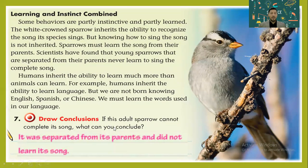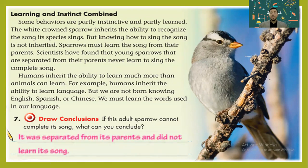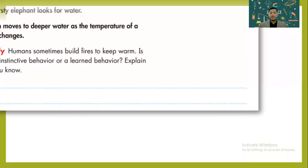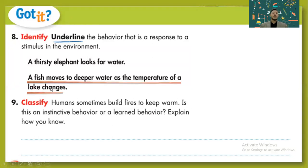What do you think? Here we have a question: if this adult sparrow cannot complete the song, what can you conclude? Yes — it was separated from its parents and didn't learn its song. Question eight: underline the behavior that is responding to a stimulus in the environment. A thirsty elephant looks for water, or a fish moves to deeper water as the temperature of a lake changes? We'll choose the second one.